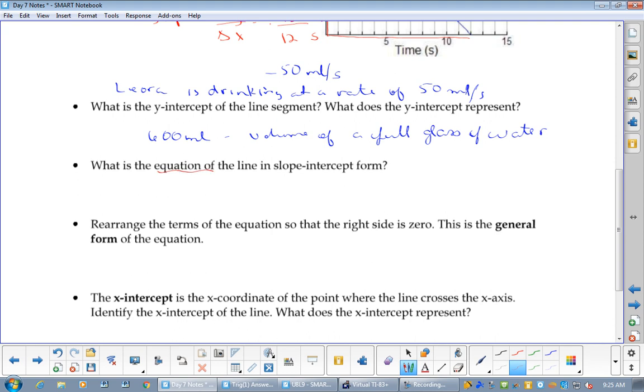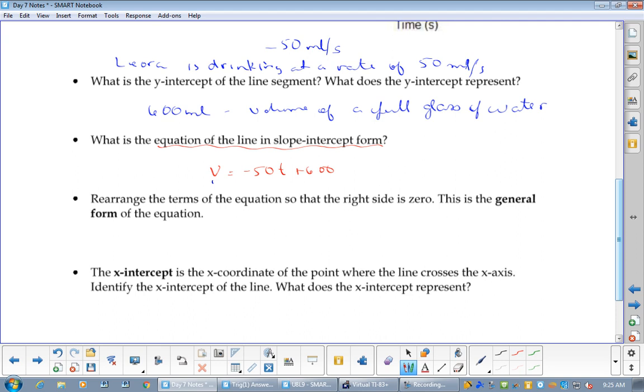Now, what would be the equation of the line in slope-intercept form? Slope-intercept form. Yes. Awesome. Or, can I be specific and call it negative 50t and I could actually even call this v equals. V equals, because we know this is y and y is v and we know this is x and x is t. So that's specific to the question. Now, I'm not in the habit of marking that wrong if you said y equals negative 50x plus 600. That's still technically correct. This is just a bit more specific to this question.